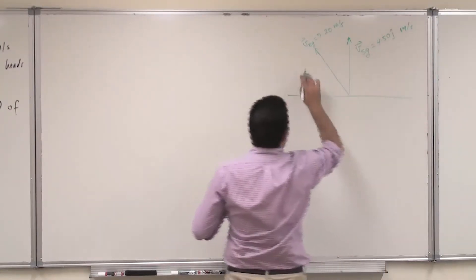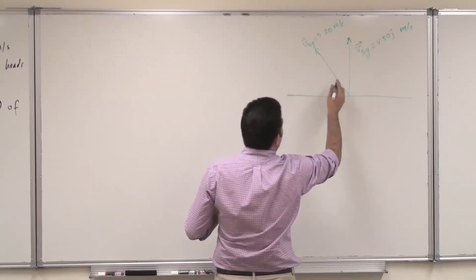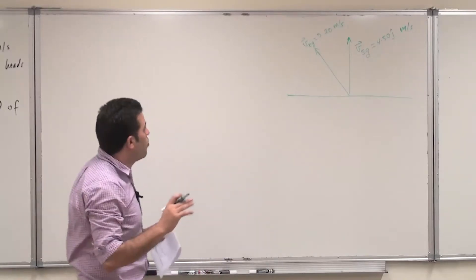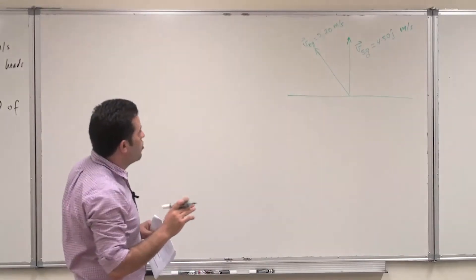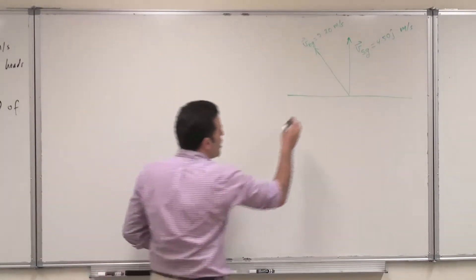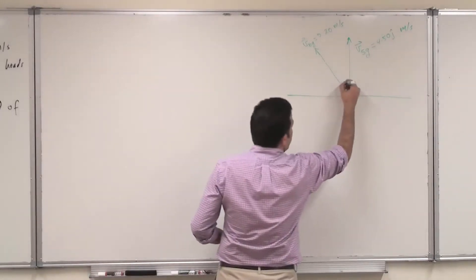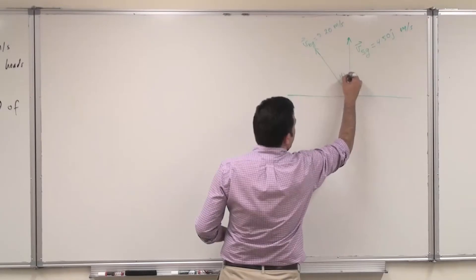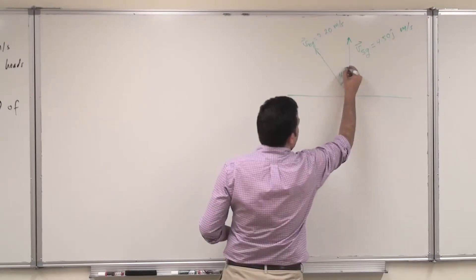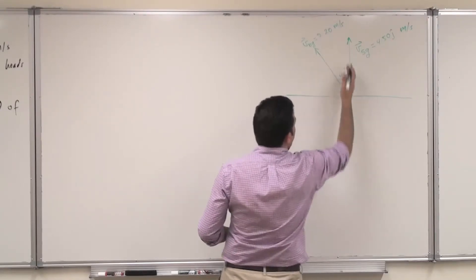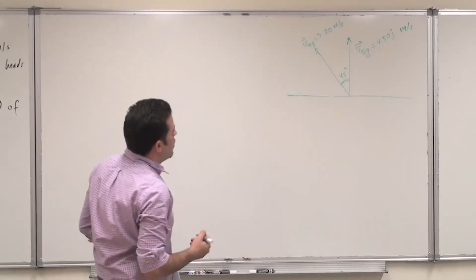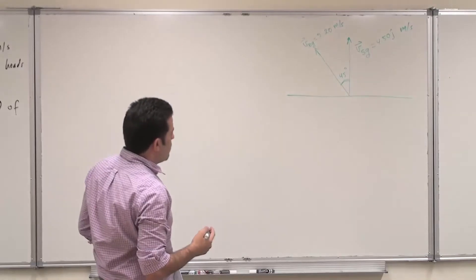This vector is, as given in the question, pointing northwest, which means it is making 45 degrees with either direction — the y or the negative x.